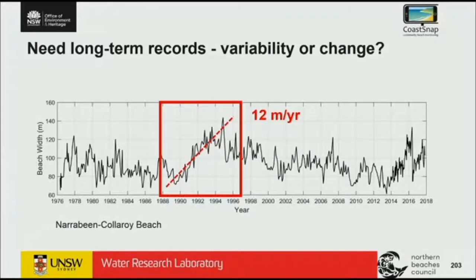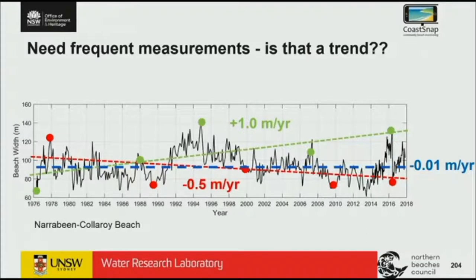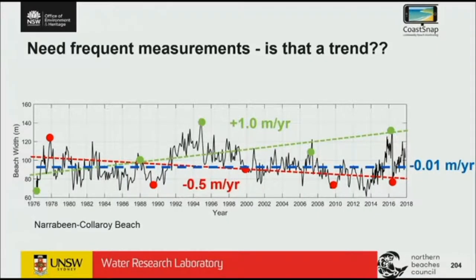Why do we need those types of data sets? We need long-term records, because if we took measurements in a short period only, we would have thought this beach was building out at 12 metres per year. But we don't just need a long-term record — we need frequent measurements. If we only measured at the green dots, we'd think the beach was accreting at a metre per year. If we only measured at the red dots, we'd think it was eroding by half a metre per year. That's the frequency of data we have for most beaches, because it typically comes from aerial photograph records captured every several years. The actual trend at Narrabeen Beach is basically completely stable — with the full data set, we know it just experiences quite large variability ranging over several years to individual storms like the one in 2016.